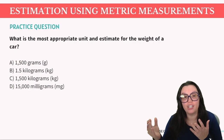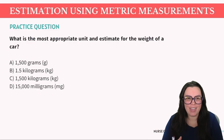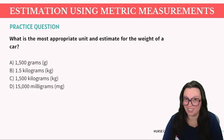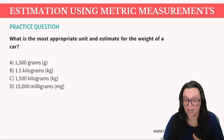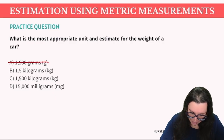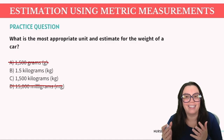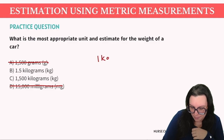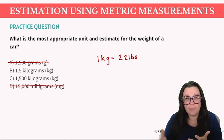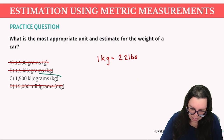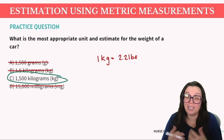Our next question: what is the most appropriate unit and estimate for the weight of a car? Is it A, 1500 grams; B, 1.5 kilograms; C, 1500 kilograms; or D, 15,000 milligrams? Cars are significantly heavier than small objects measured in grams and milligrams, so we can eliminate A and D. One kilogram equals 2.2 pounds, so 1.5 kilograms is just a little over three pounds — way too light for a car. Based on all available answers, C, 1500 kilograms, is the most correct answer.